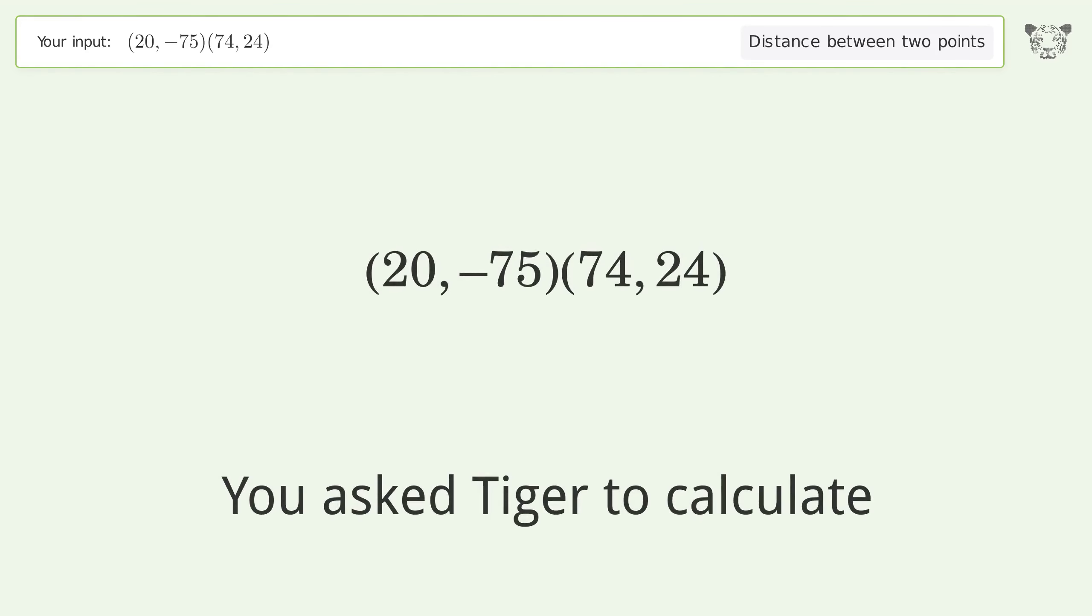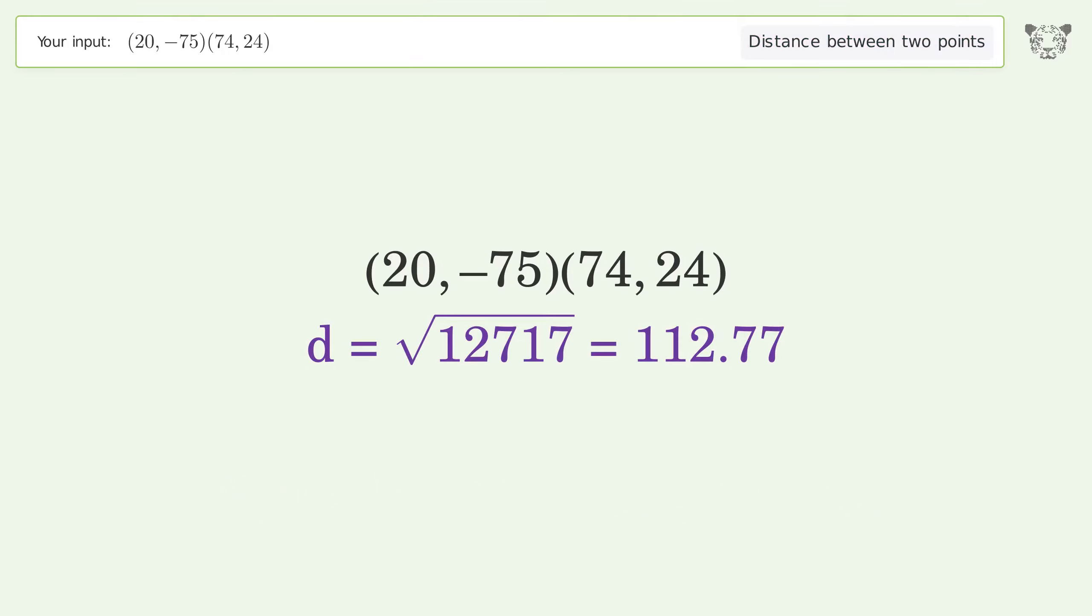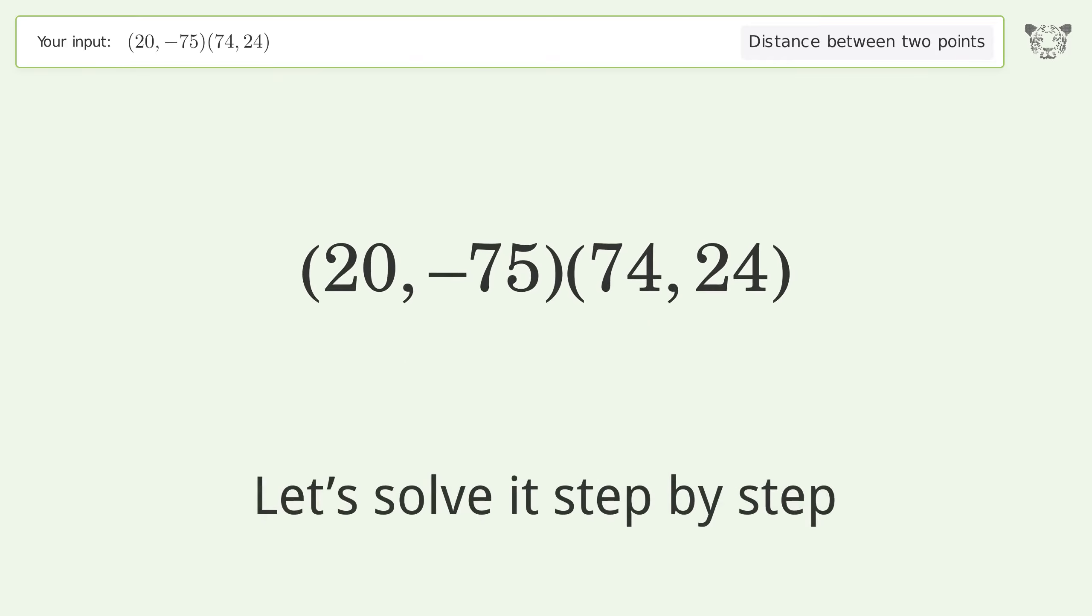You asked Tiger to calculate the distance between two points. The distance between the two points is the square root of 12,717 or 112.77. Let's solve it step by step.